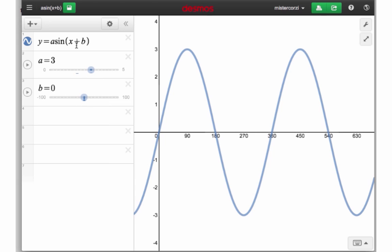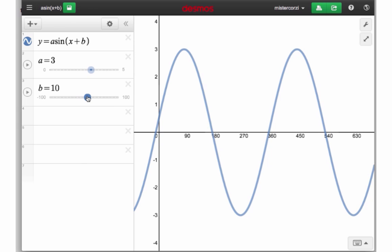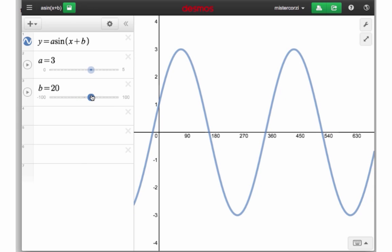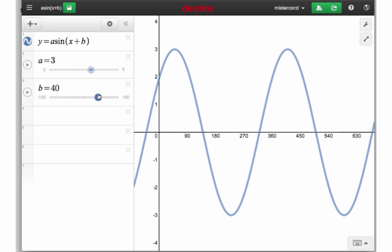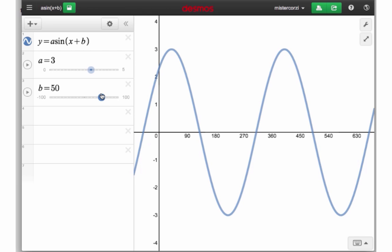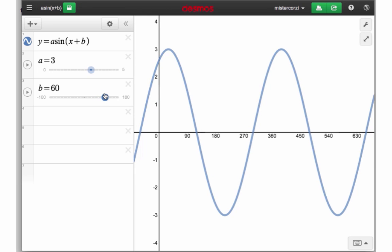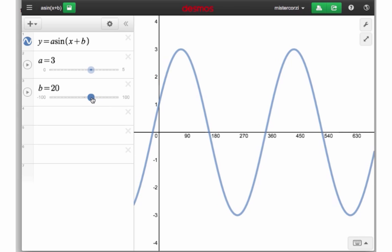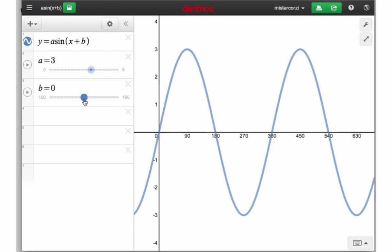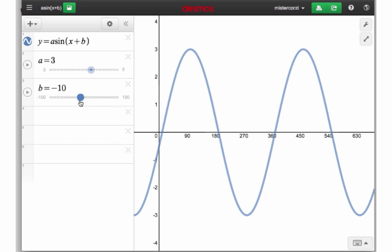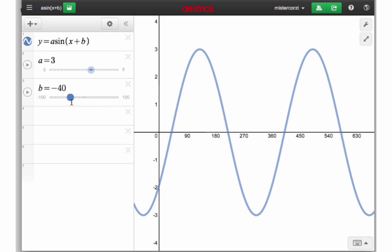Adding a number to the angle X. Let's just have a look. There's adding 10, adding 20, adding 30, adding 40 and so on. You notice when we add numbers, the graph moves to the left. When we subtract numbers, there's adding negative 10, that's like subtracting 10, the graph moves to the right.